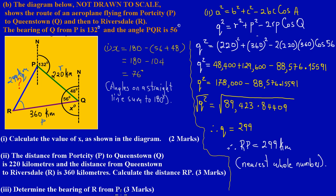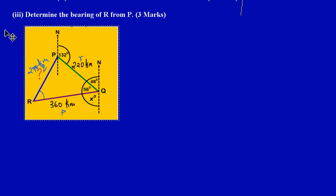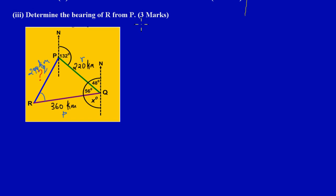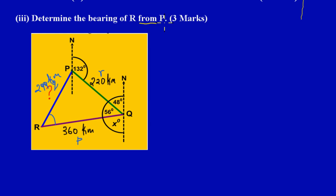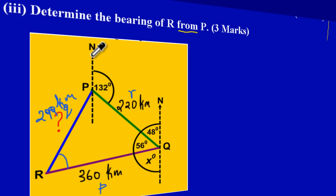Let's cut this and bring it down where we have a little more space to work with. They're asking us to determine the bearing of R from P. The word 'from' is very important — whichever letter follows 'from', that's where you position yourself. Since they're asking for the bearing of R from P, I position myself at P, line up on the north line as the reference, and measure clockwise.